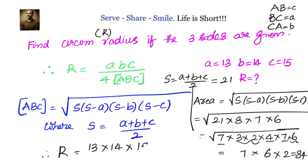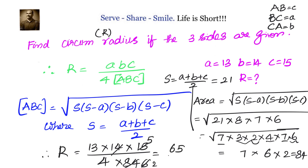Therefore, circumradius R = (13 × 14 × 15) / (4 × 84). Simplifying: 14 divides by 4 to give factors, and after cancellation we get R = 65/8. If the units are centimeters, then the circumradius is 65/8 centimeters.